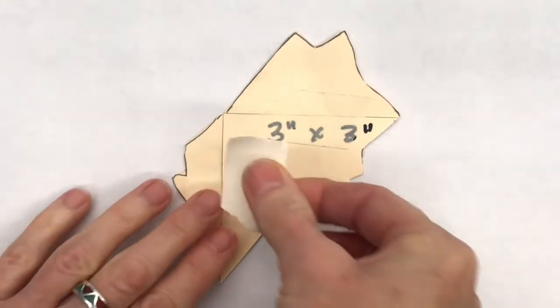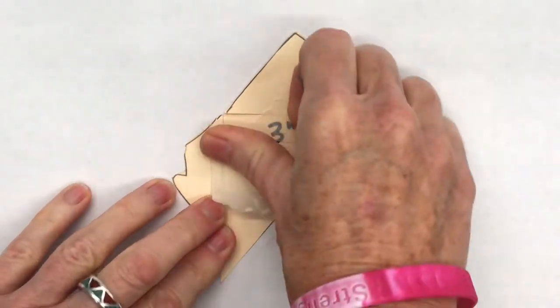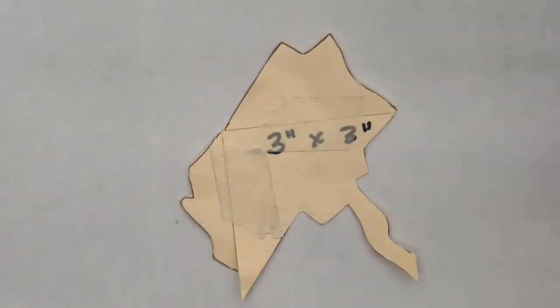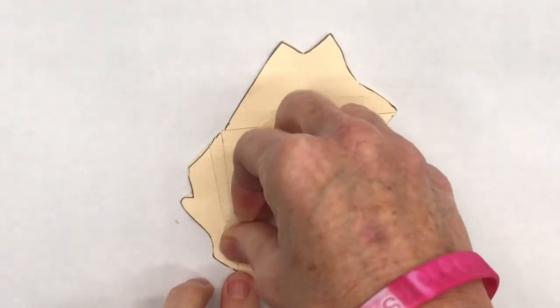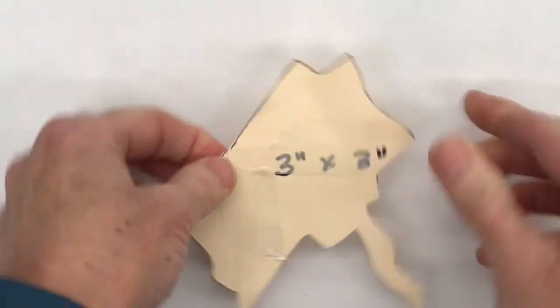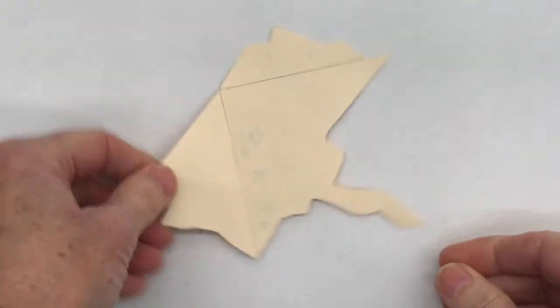And then tape it down like you did the first time. The tape should not hang over the edges. It should just fit on the paper, but not be so big that it hangs out beyond the edges.